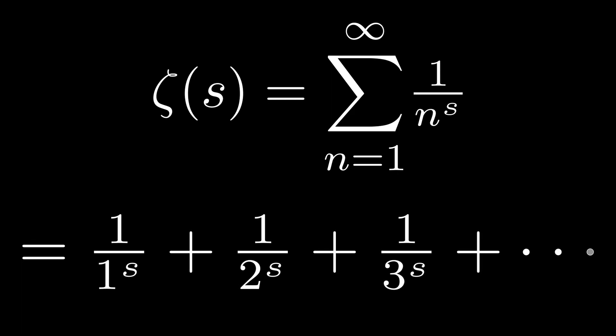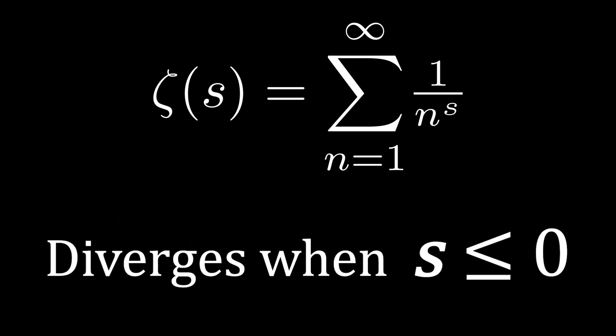From this definition, it isn't hard to see that the zeta function diverges when s is a real number less than or equal to zero. And if you've seen a proof, you may know that zeta diverges even if s is less than or equal to 1.